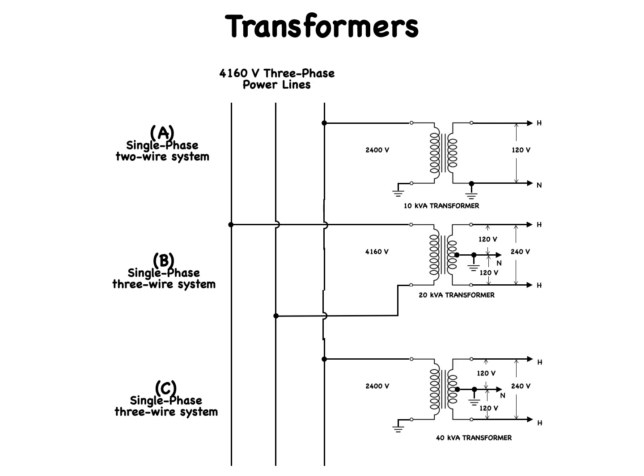Most electrical power, when produced at the power plants, is produced as three-phase AC voltage. Electrical power is also transmitted in the form of three-phase voltage over long-distance power transmission lines. At its destination, three-phase voltage can be changed into three separate single-phase voltages for distribution into residential areas.